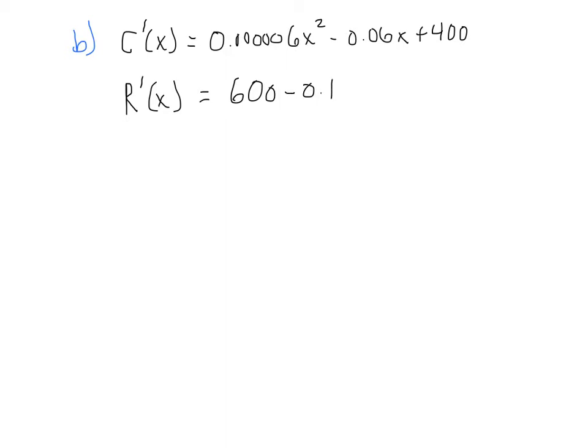So here's that list of derivatives, those marginal functions. First of all, let's do the derivative of C, C prime. Just following the power rule on this polynomial, I'm going to get 0.0000006X squared minus 0.06X plus 400. And the 80,000 goes away. The derivative is 0. The marginal revenue function, R prime of X,